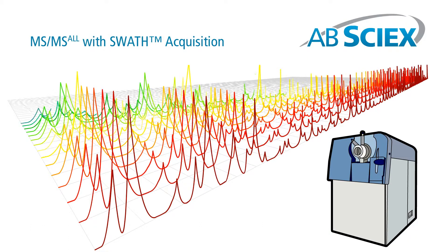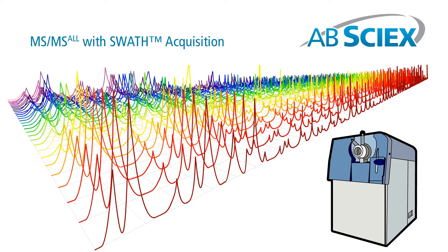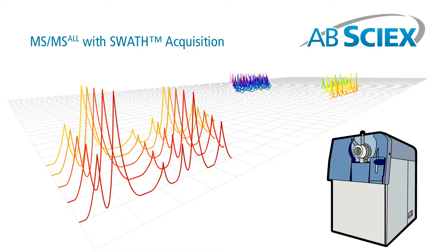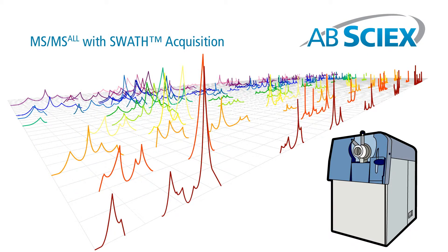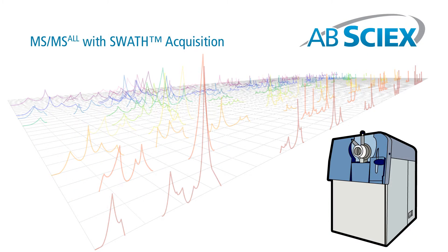SWATH acquires highly reproducible quantitative MS/MS data for virtually every detectable peptide or protein in even the most complex samples, combining the quantitative strength of targeted proteomics with the scope and depth of traditional shotgun proteomics.